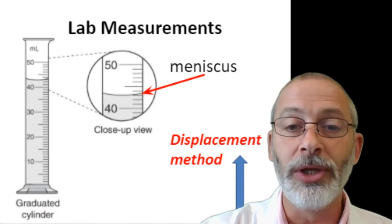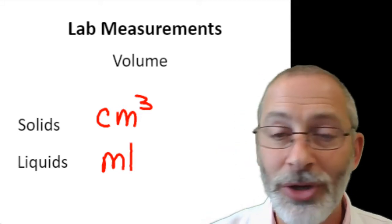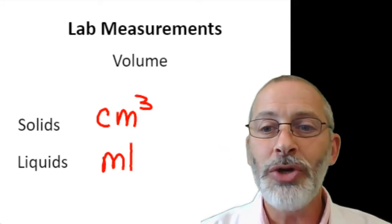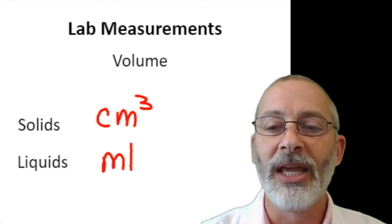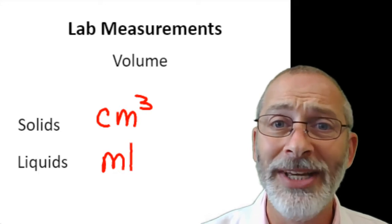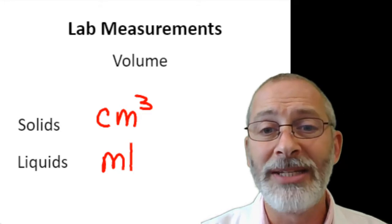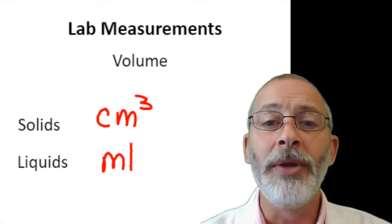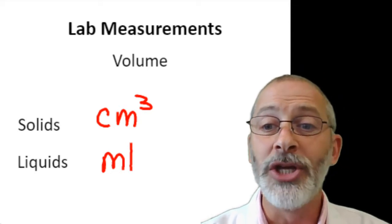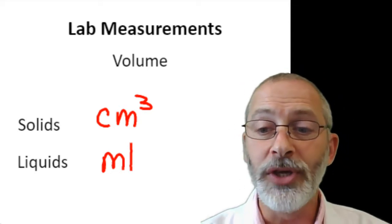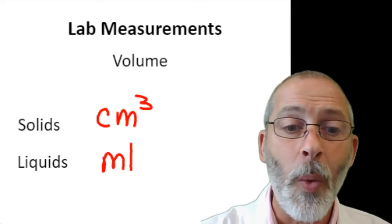There's some really important information here. We measure volume a little bit differently when it comes to solids and liquids. Write down that for solids we measure volume with the units cubic centimeters, and we measure liquids with the unit milliliters. I'm now going to show you why.